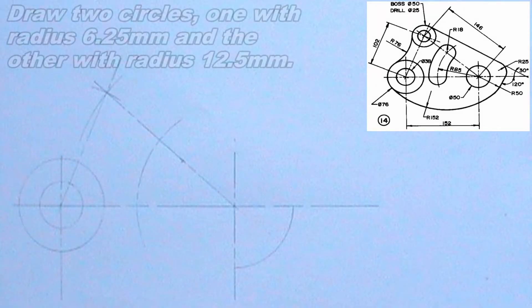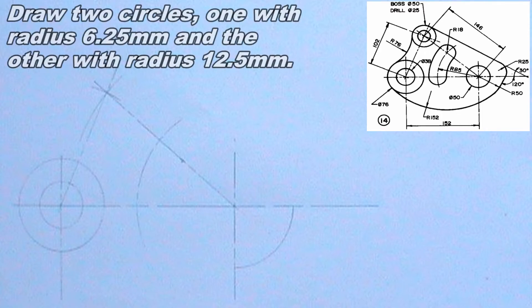I will draw two more circles: one of radius 6.25mm and the other of radius 12.5mm. The two circles should have a common center, and the center should be at the point where the two arcs at the top intersect.